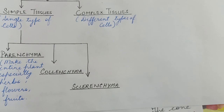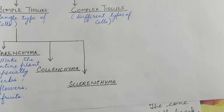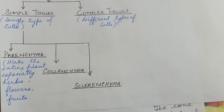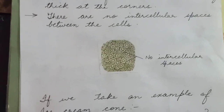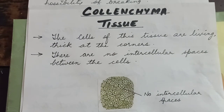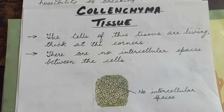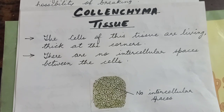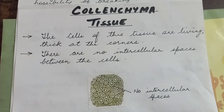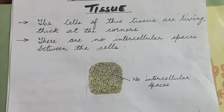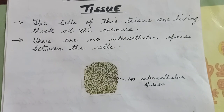Now we are going to study about the second type of tissue, that is collenchyma tissue. The cells of this tissue are living, they are thick at the corners, and there are no intercellular spaces between the cells. As you can see in the picture, the cells of this tissue are living cells, thick at the corners, with no intercellular spaces between them.